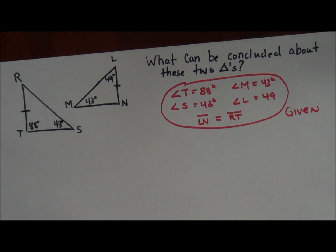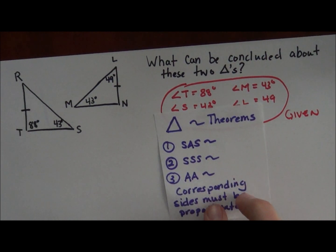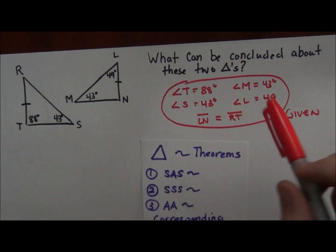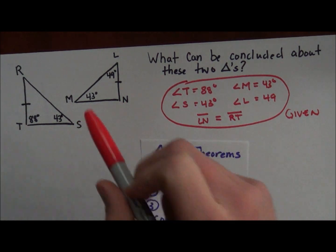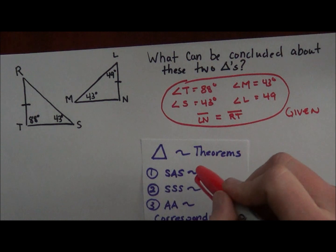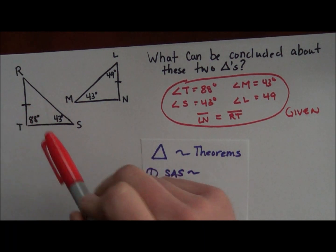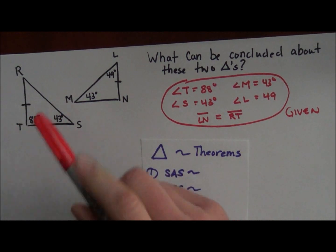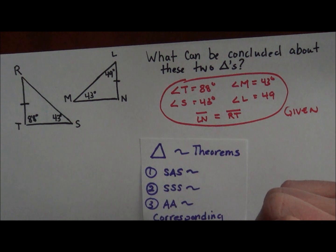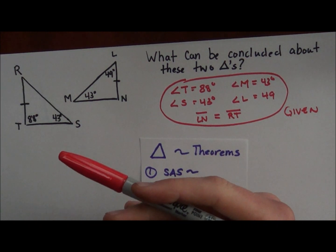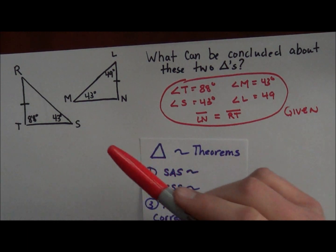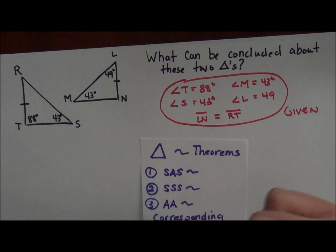Now I'm going to look for similarity first. Based on the given information, I'll check whether I have enough to set up a proportion using two sides. Since I'm not given any side measures and these are two separate triangles that aren't connected, I can't use side-angle-side. That also throws out side-side-side. So what I'm going to look for is angle-angle similarity.